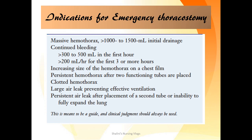Indications for emergency thoracostomy include: massive hemothorax of more than 1000–1500 ml on initial drainage; more than 300–500 ml in the first hour or more than 200 ml per hour over the first three consecutive hours after ICD insertion; increasing size of hemothorax on chest film; persistent hemothorax after two functioning tubes are placed; clotted hemothorax; large air leak preventing effective ventilation; persistent air leak after a second tube; or inability to fully expand the lung. These are guides — clinical judgment should always be applied.